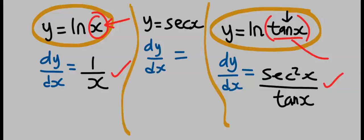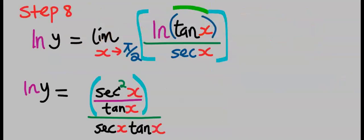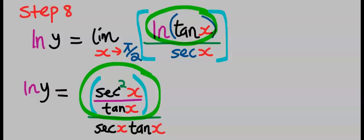Likewise, if you differentiate sec x, your answer is going to be sec x tan x. With this concept, next, let's differentiate the numerator, which is ln tan x, and we're going to have sec squared x over tan x. Next, we're going to differentiate the denominator, which is sec x, and our answer is sec x tan x.